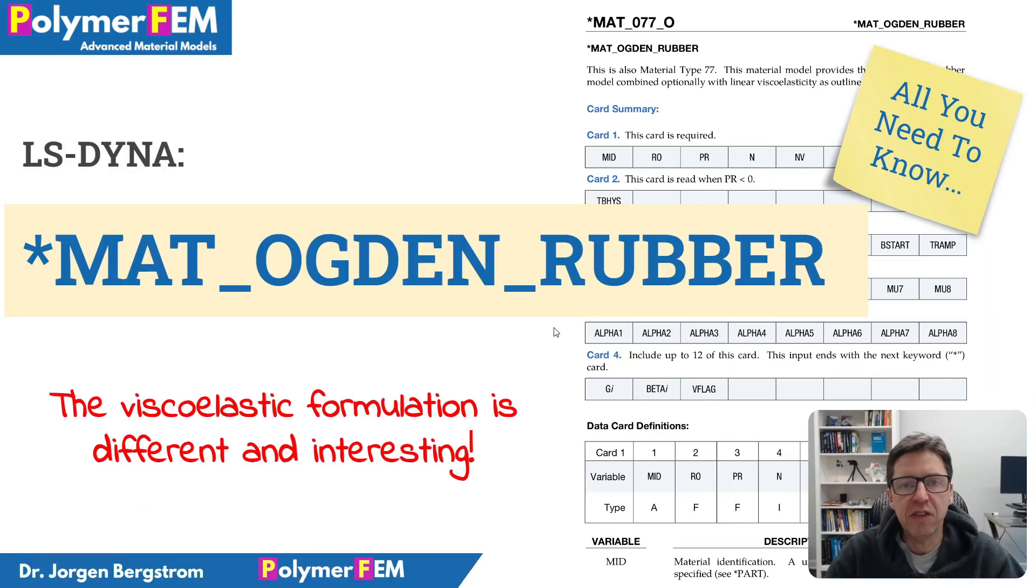Hi, today I'm going to talk about the LS Dyna material model called Matt Ogden Rubber. This is an interesting Ogden material model that also can handle linear viscoelasticity.